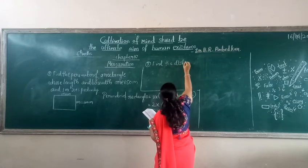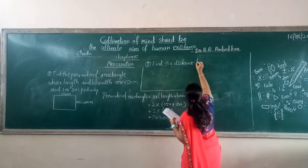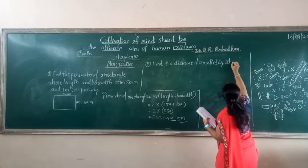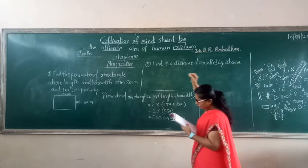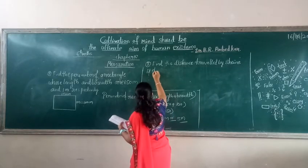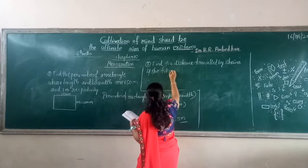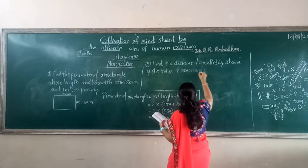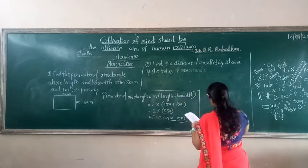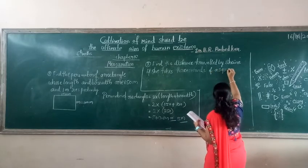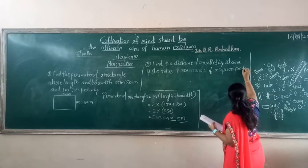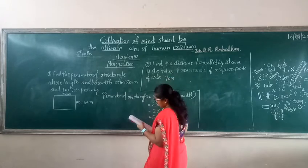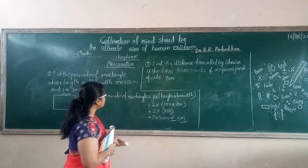The next problem: find the distance traveled by China if she takes three rounds of a square park of side 70 metres. Let's see how we need to solve this problem.